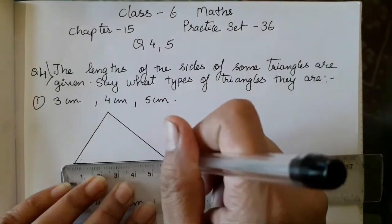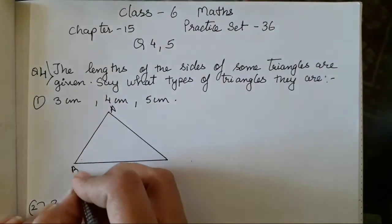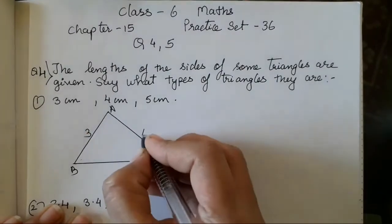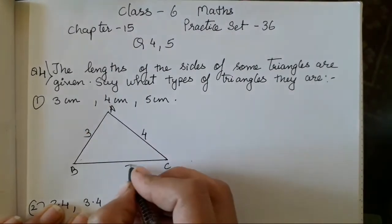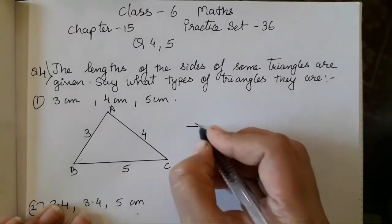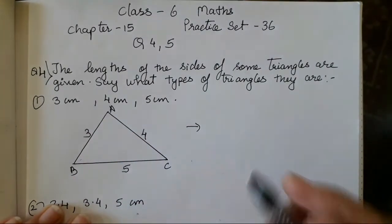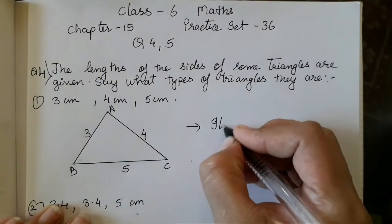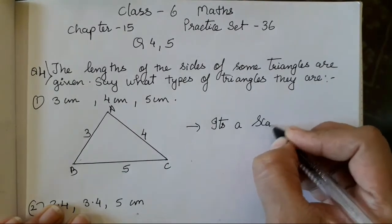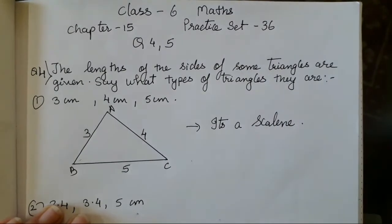We will take this triangle as ABC, and mark the sides as 3 cm, 4 cm, and 5 cm respectively. When all the sides of a triangle are different, it is a scalene triangle.